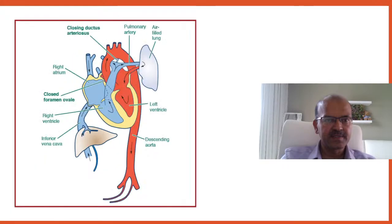After birth, when the cord is clamped, systemic vascular resistance increases, the PDA closes, shunting through the foramen ovale stops, and the ductus venosus constricts. The umbilical venous circulation stops, and the circulation transitions from a parallel fetal circuit to the adult pattern, with pulmonary and systemic circulation running in series as the lungs open up.